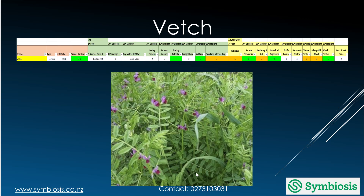Vetch is good at fixing nitrogen and is very hardy in winter. It's also good for grazing, good for soil building, good for soil compaction, not a bad subsoiler, good at rendering phosphorus and potassium available, and great for beneficial organisms. It's a fantastic plant.